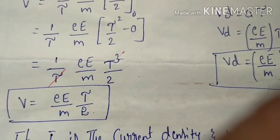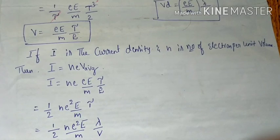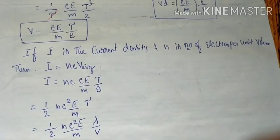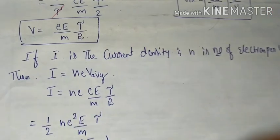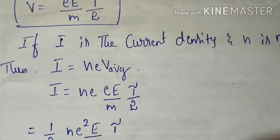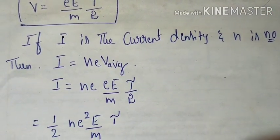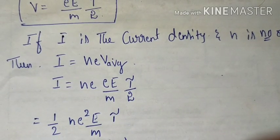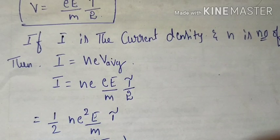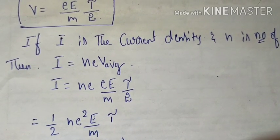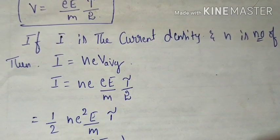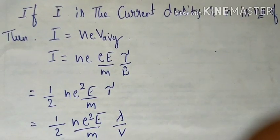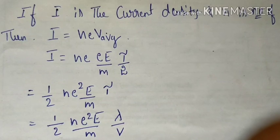Taking i as the current density and n as the number of electrons per unit volume, the current density is i = n·e·v_average. Substituting the value of velocity, we get i = n·e·(eE·tau)/(2m), which simplifies to i = (1/2)·n·e²·E·tau / m.